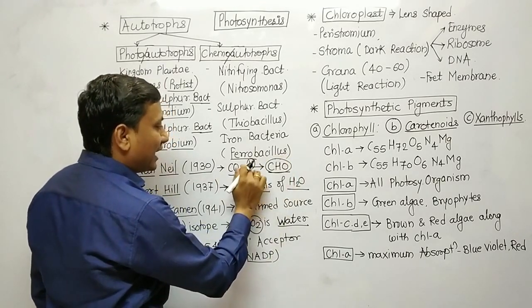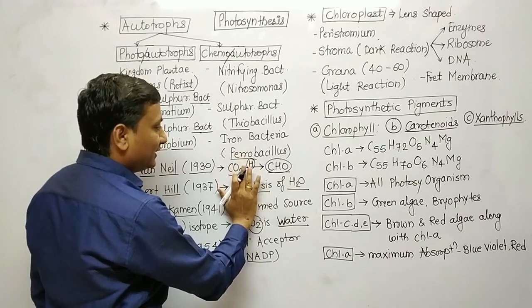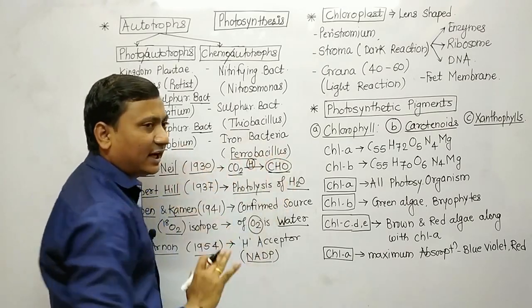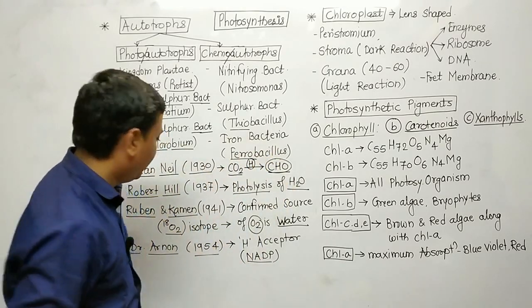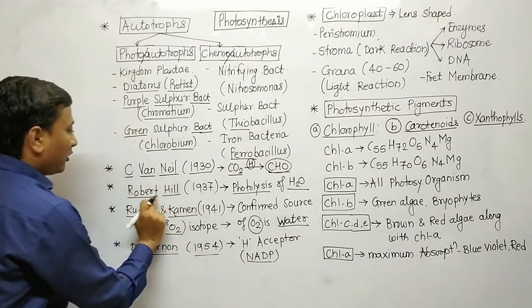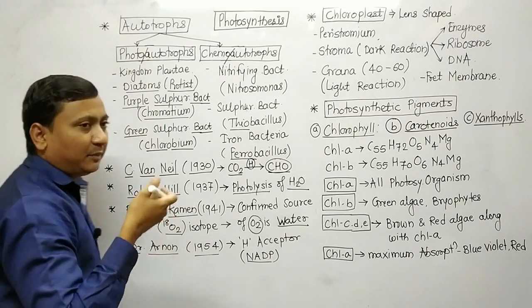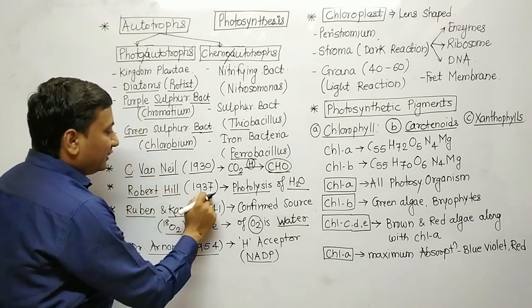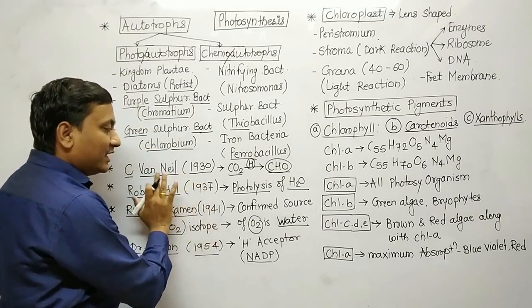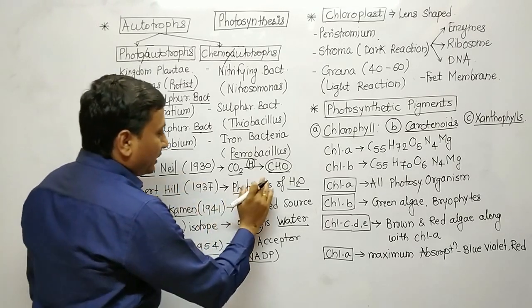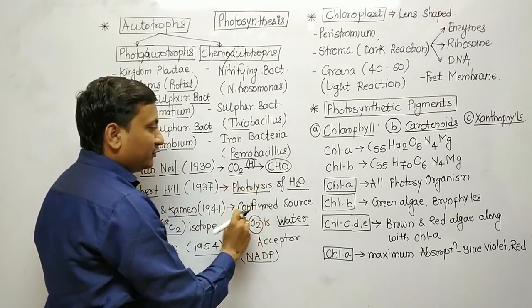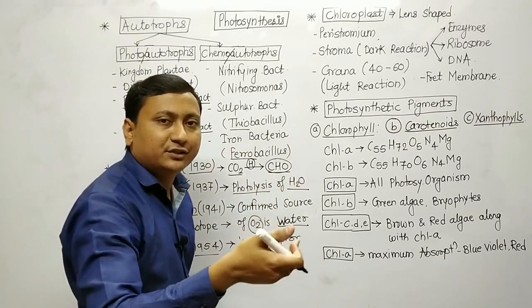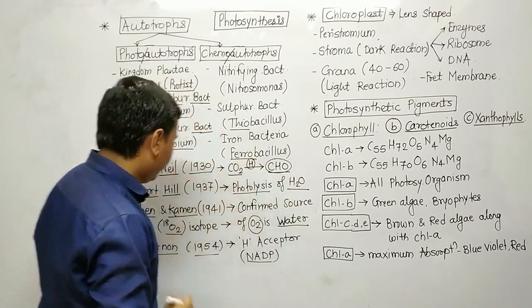CO2's reduction is made by hydrogen, converting CO2 into carbohydrates. Robert Hill — known for the Hill reaction — in 1937 proved that in photosynthesis there is a breakdown of water, called the photolysis of water.